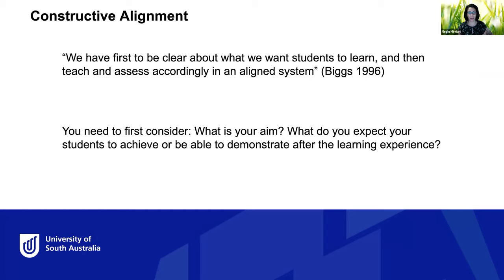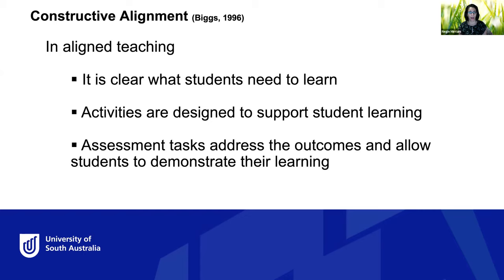That brings us to what John Biggs calls constructive alignment — the notion that you want to be really clear about what students are going to learn, then you teach them that, then you assess them through that aligned system. So: what's your aim, what do you expect your students to be able to achieve or demonstrate after the learning experience? It's really important to know your aim before you start looking at the technology, because there are a lot of tools out there and you can easily get distracted if you don't know your main aim.